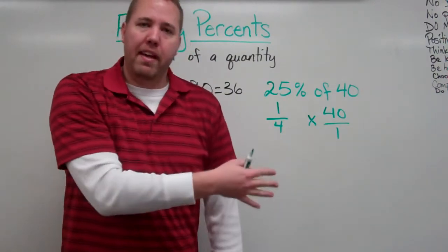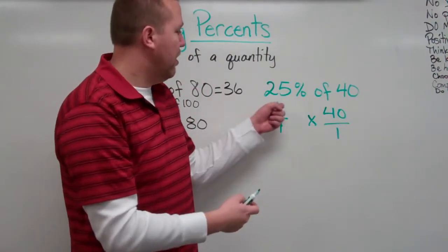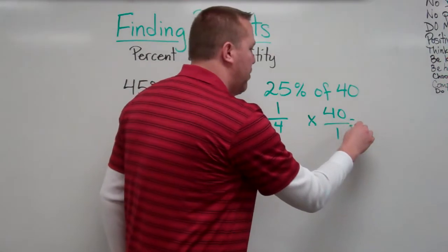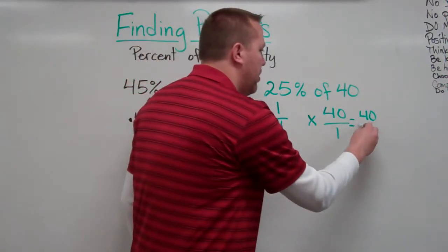So, we have multiplying fractions. How do you multiply fractions? Multiply straight across. So, numerator times numerator. 1 times 40 equals 40. 4 times 1 equals 4.